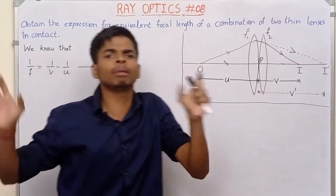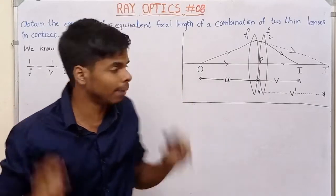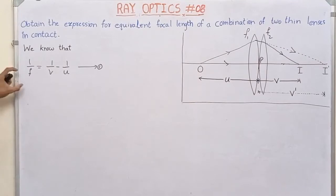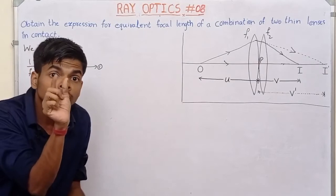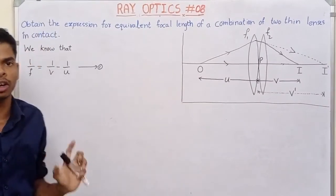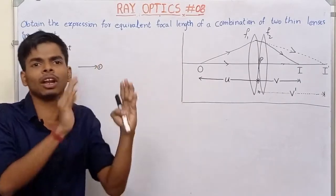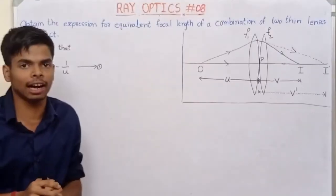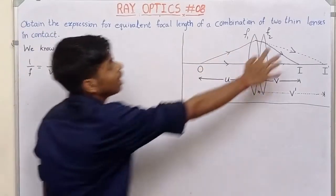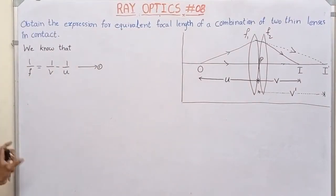Alright, same — now the Hindi derivation here is the lens maker's formula. This is the thin lens formula. We know that this formula is called the thin lens formula. Now we are going to derive the lens maker's formula. I am going to apply the thin lens formula.